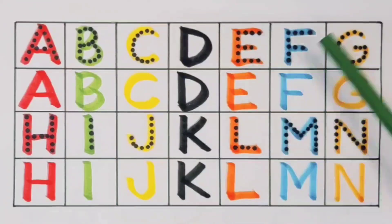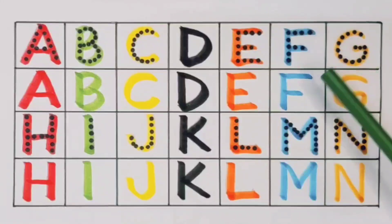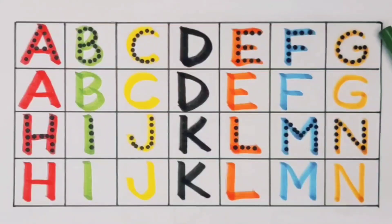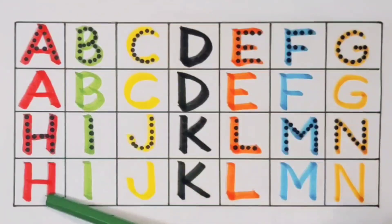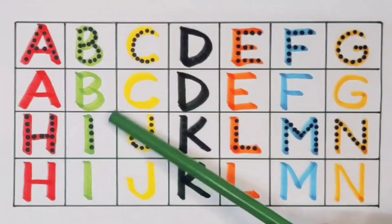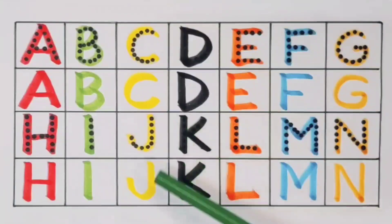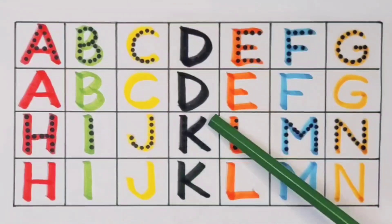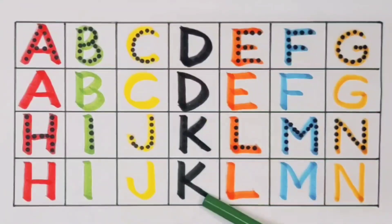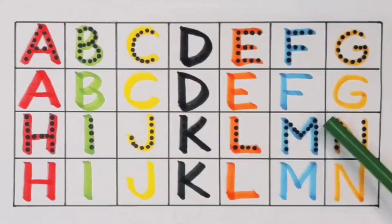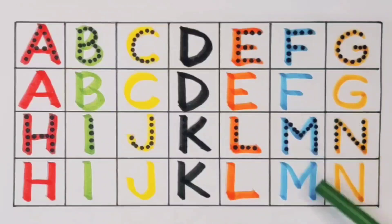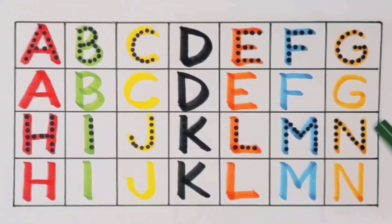F for flower, G for guitar, H for hand, I for insect, J for jeep, K for cattle, L for lamp, M for milk, N for net.